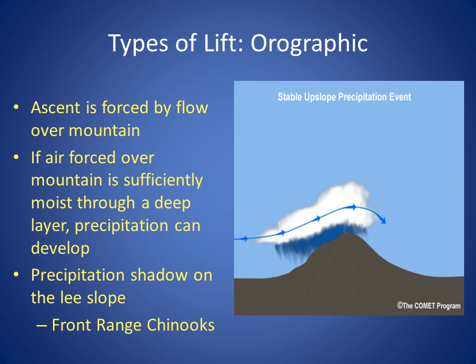The last type of lift we will talk about is orographic lift. In this situation, we have stable ascent being forced by the flow over a mountain. The air will cool as it is forced over the mountain range. If the air is sufficiently moist to a deep enough layer, clouds and subsequently precipitation will occur. This is one of the reasons why we tend to see more precipitation fall over the mountain locations than in the adjacent valley floors.